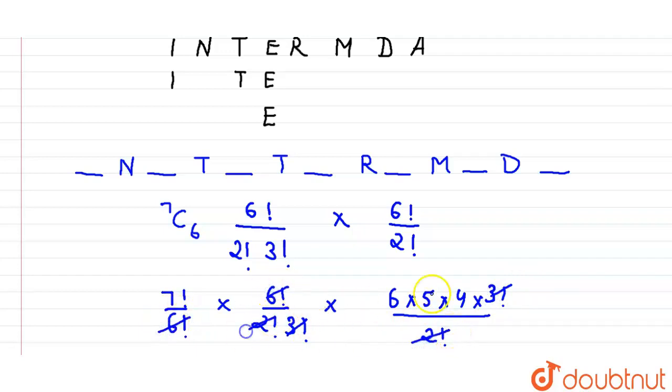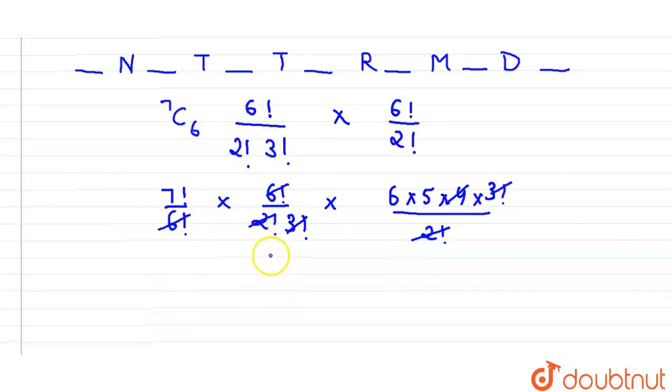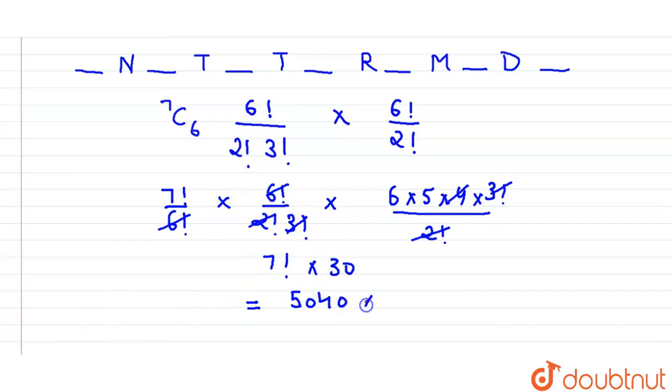So now it will become 7! times 30. 7! will be 5040 times 30. So when you multiply these two, it will become 151200. So this is the number of ways, and this is the answer.